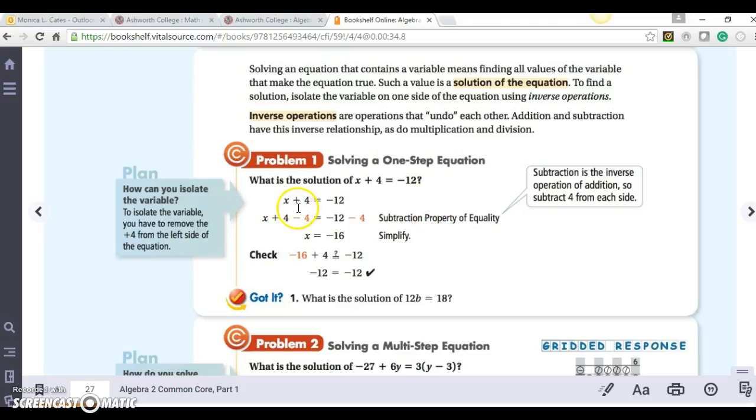Well, I want to get my variable by itself. So I'm adding 4. The inverse of that will be subtracting 4. So whatever I do to one side, I have to also do to the other. So subtraction is the inverse operation of addition. Subtract 4 from each side. So I get X equals negative 16.